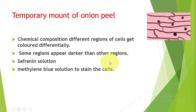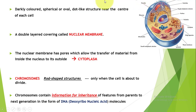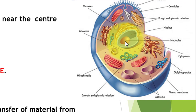Besides iodine solution, we can also use safranin solution or methylene blue solution to stain cells. Now let's see what that dark region in the center is. That darkly colored, spherical or oval, dot-like structure near the center of each cell - that is the nucleus.